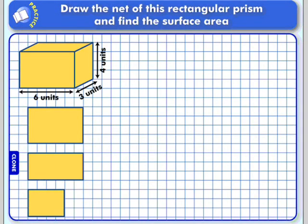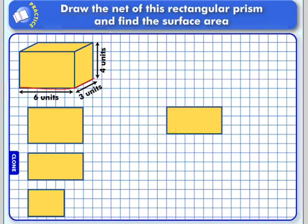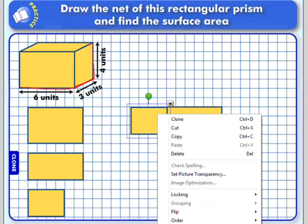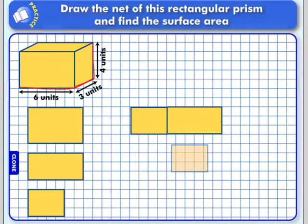Let's do a net of this rectangular prism. I always like to start with the base. The base of our rectangular prism is six by three. So I'm going to start with my base, which is six by three. Then I'll do the sides — the sides are three by four, and we have two sides. Just pretend that you're unfolding the shape, unfolding the box. Let's do our lateral face here.